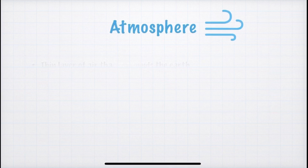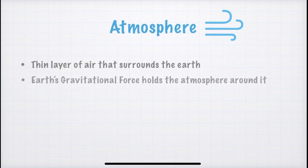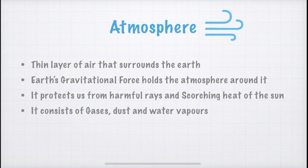Next, we have atmosphere. Atmosphere is the thin layer of air that surrounds the earth. Now, what is holding it together? The answer is the gravitational force of the earth — earth's gravitational force holds this blanket of atmosphere together. Atmosphere protects us from harmful rays and the scorching heat of the sun. It also consists of gases like oxygen, nitrogen, etc., dust, and water vapours.